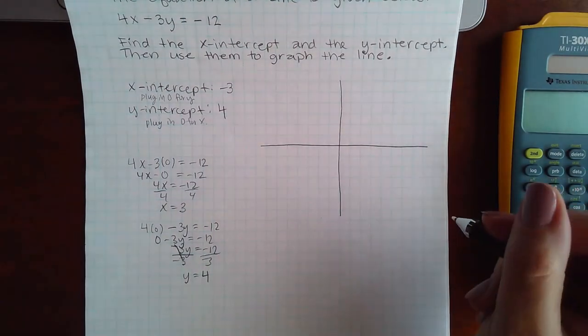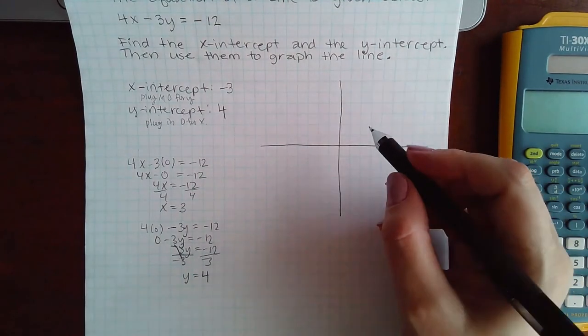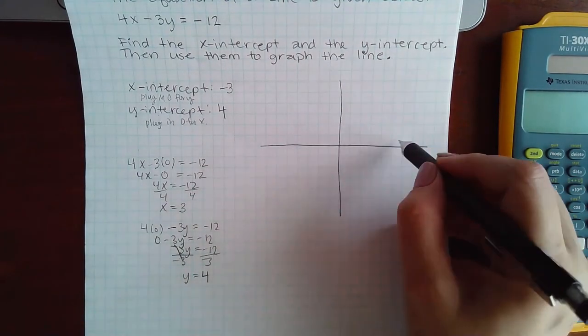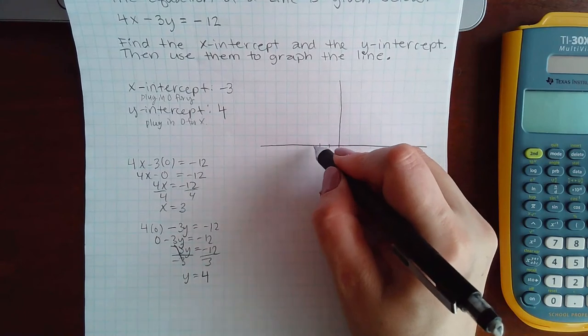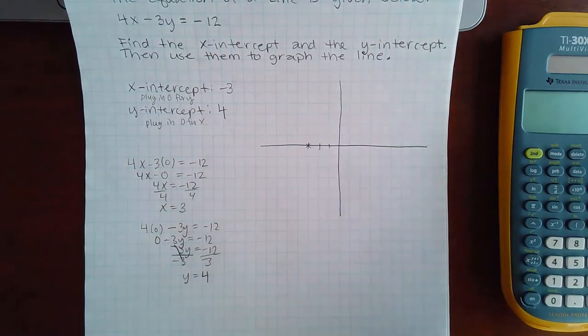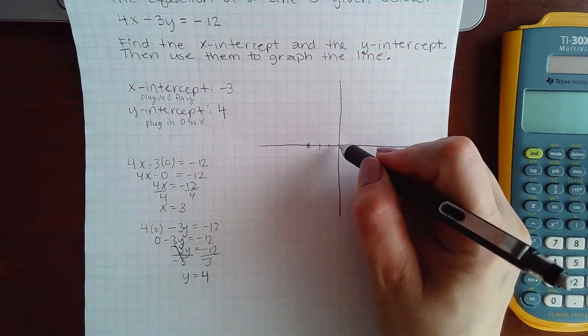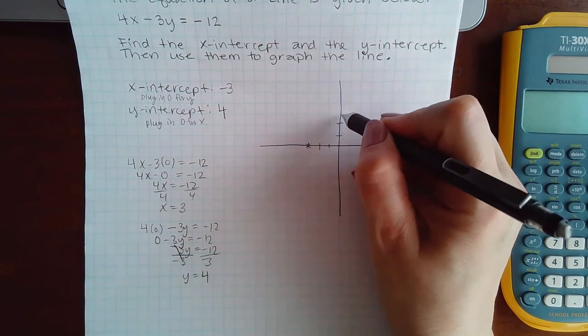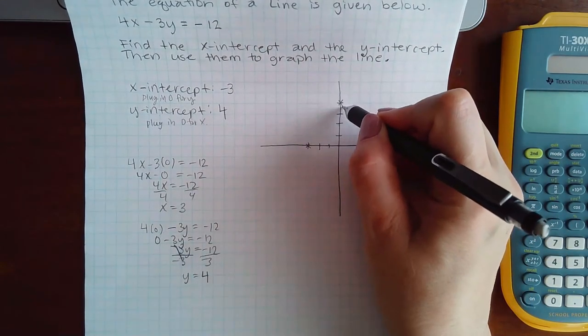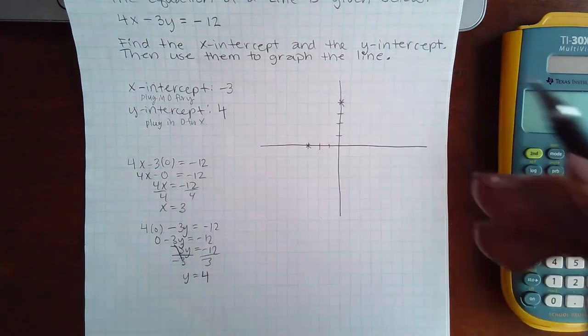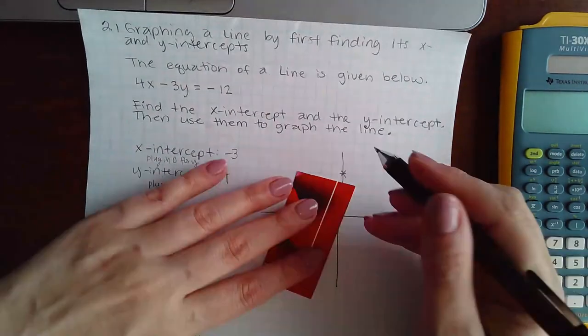So you grab the line icon, and the x-intercept is on the x-axis at the value of x equal to negative three. So you mark a point there with your cursor, then the y-intercept of positive one, two, three, four, mark a point there with your cursor, and it will automatically draw the line for you.